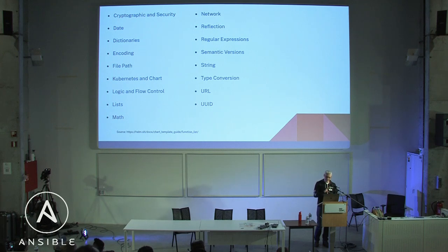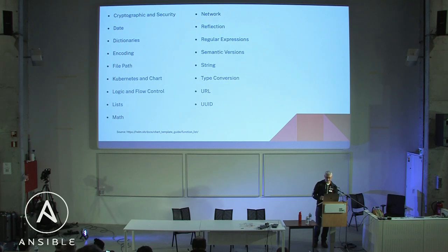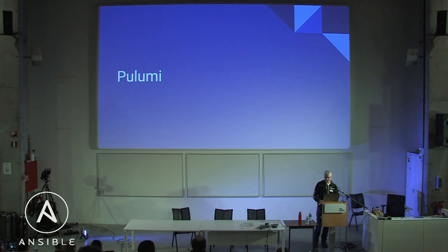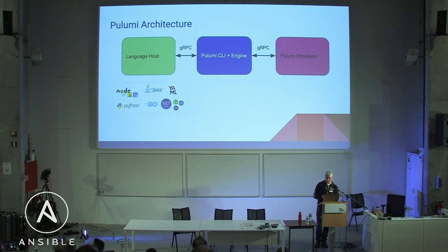What Chef and Helm have in common is that the tool itself runs entirely in the same language runtime. Helm is a compiled Go binary — a static binary — and all of Chef runs in the Ruby environment. It's a single process and done.